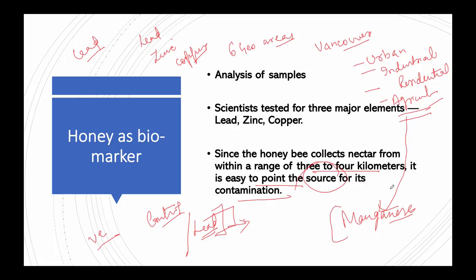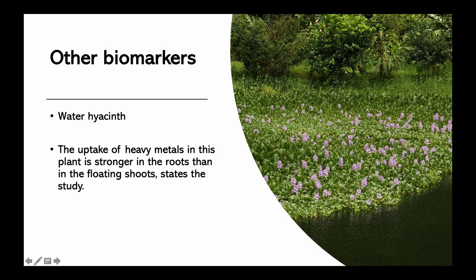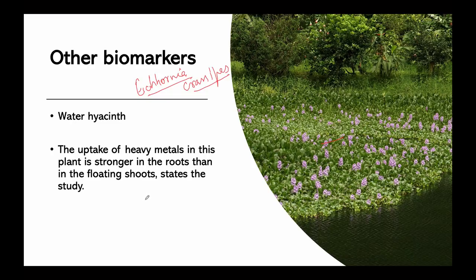Similarly, another study identified the aquatic plant water hyacinth — scientific name Eichhornia crassipes — as a biomarker. This plant is commonly found in tropical countries and is known for its ability to absorb nutrients and other elements from water. Its stems and leaves have been successfully used as indicators of heavy metal pollution in tropical countries, and the uptake of heavy metals is stronger in the roots than in the floating shoot parts.